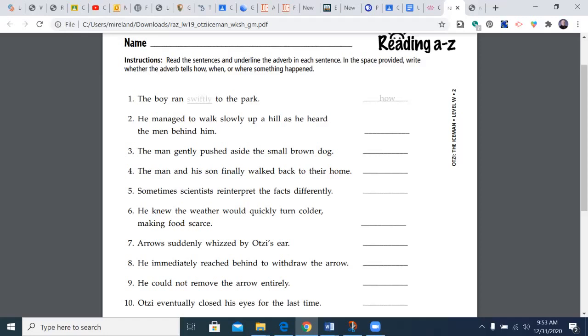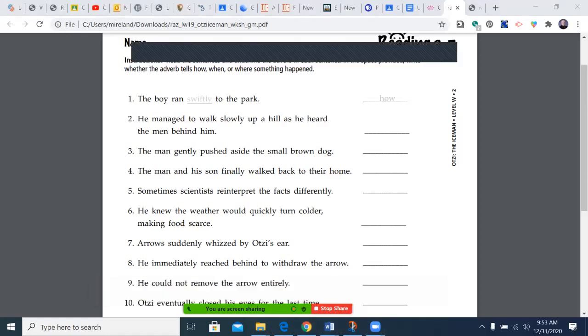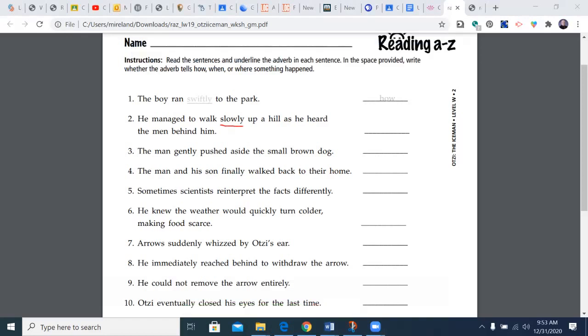Looking at number two on this page: 'he managed to walk slowly up a hill as he heard the men behind him.' Let's grab my annotation tool. How did he walk? You said slowly, you're right. And that would tell us how.